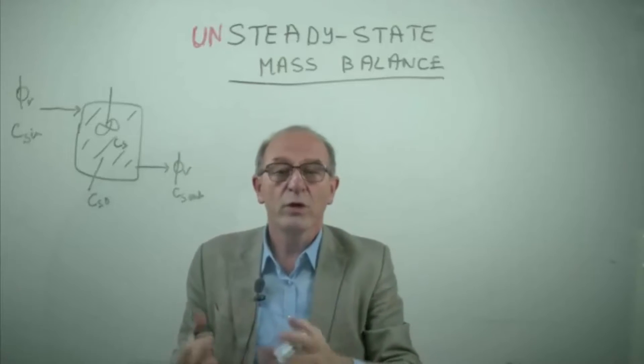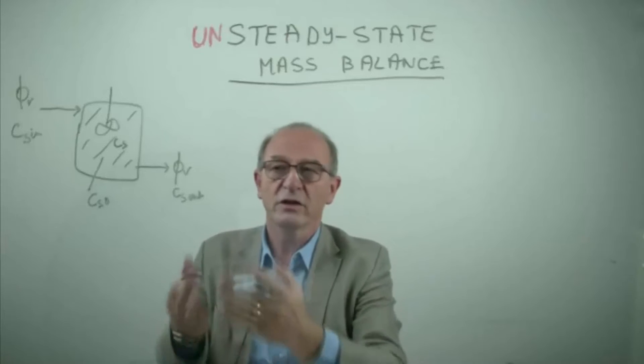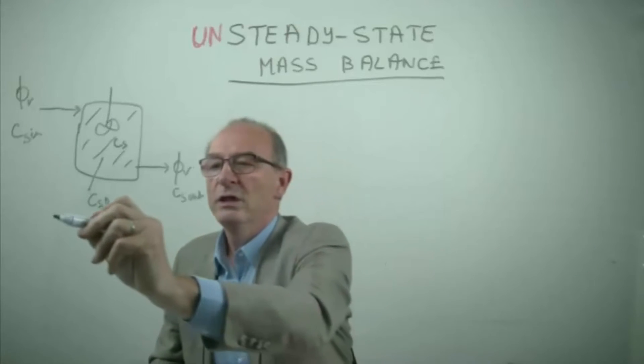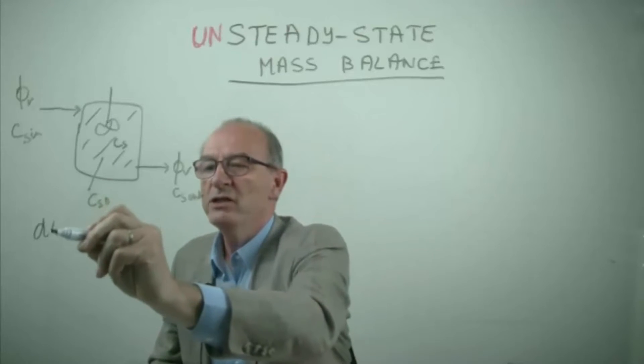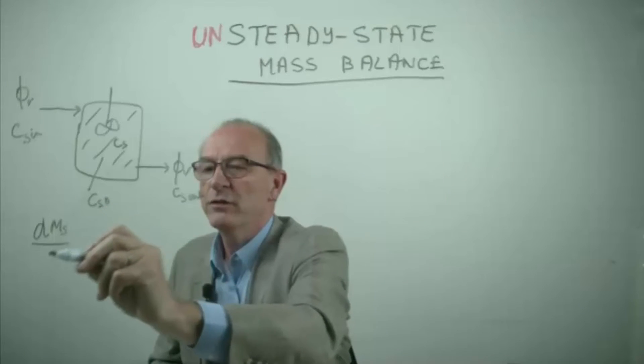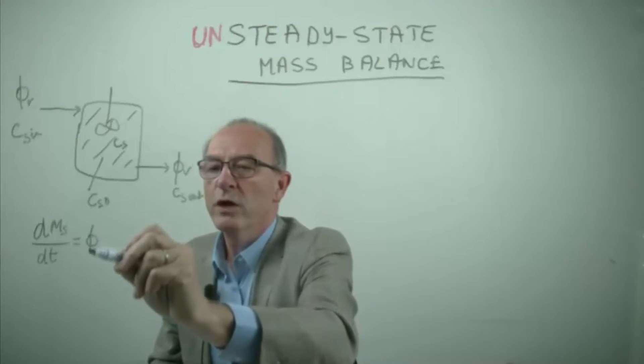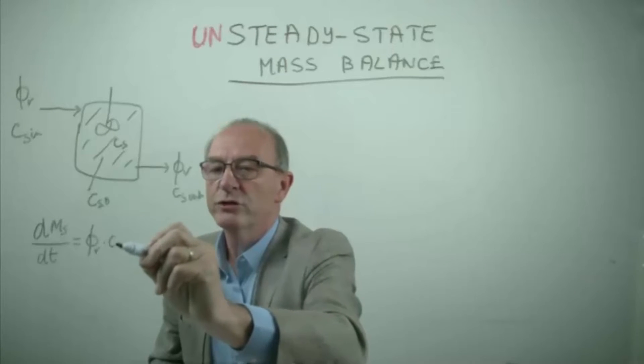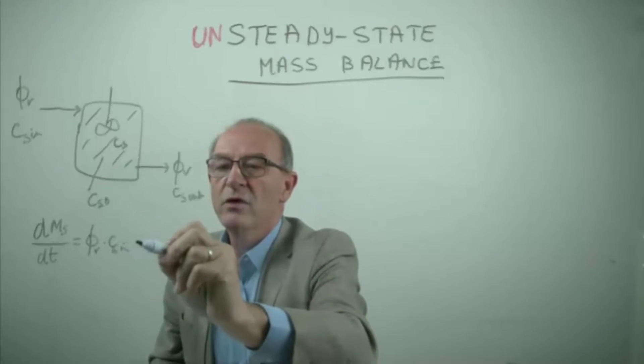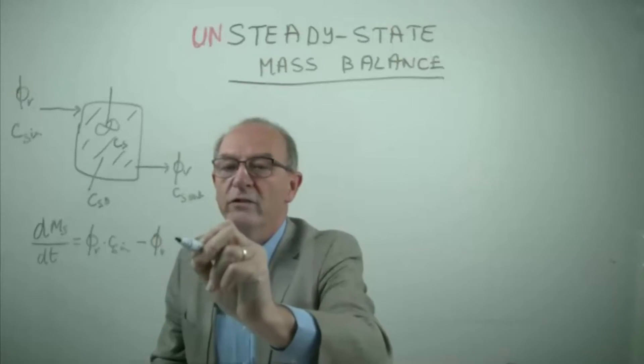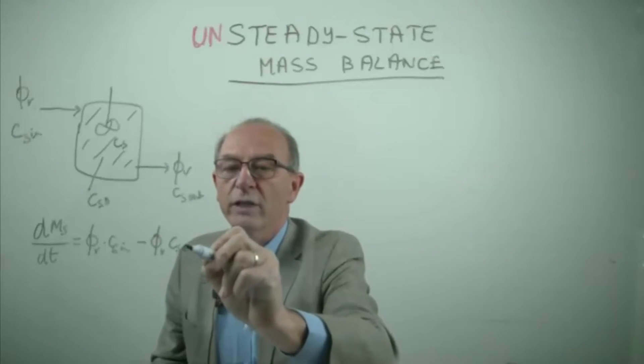How do we solve this problem? First we set up the mass balance over the salt in the vessel. The change of the salt as a function of time is equal to the volume flow rate multiplied by the concentration in the inlet minus the volume flow rate multiplied by the concentration in the outlet.